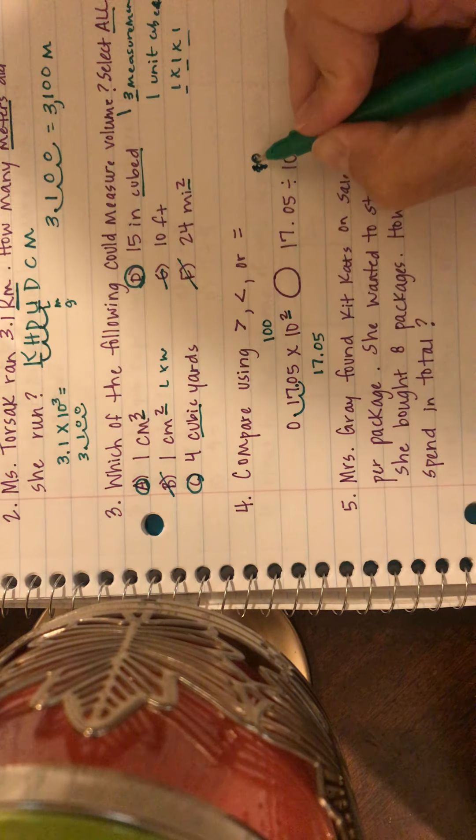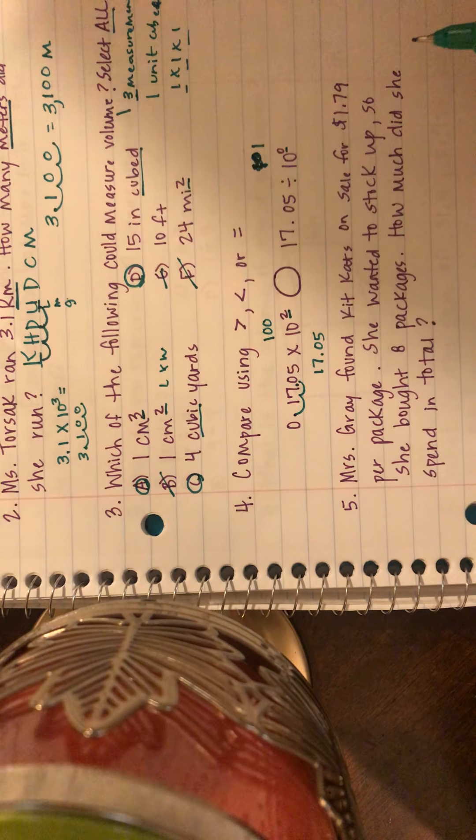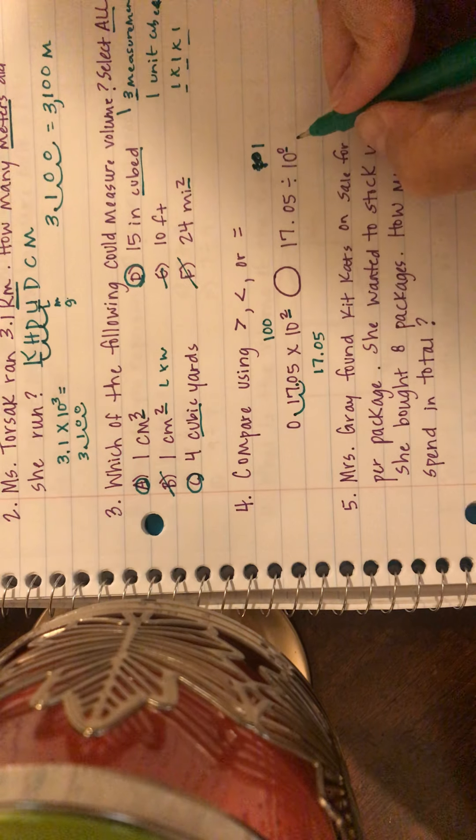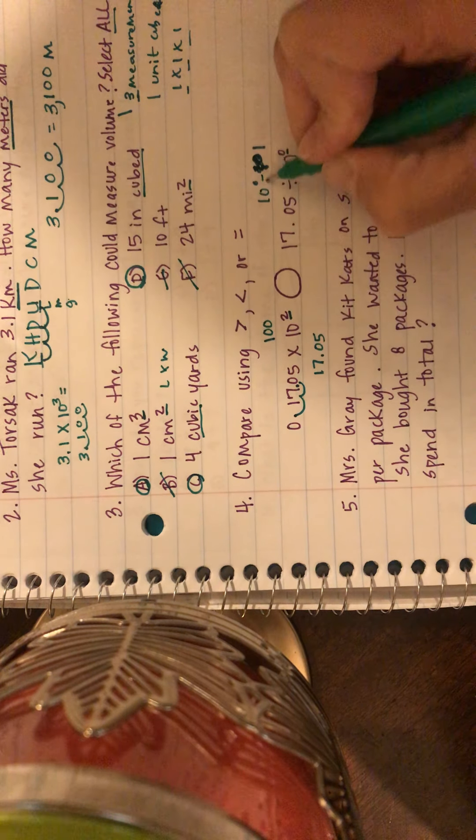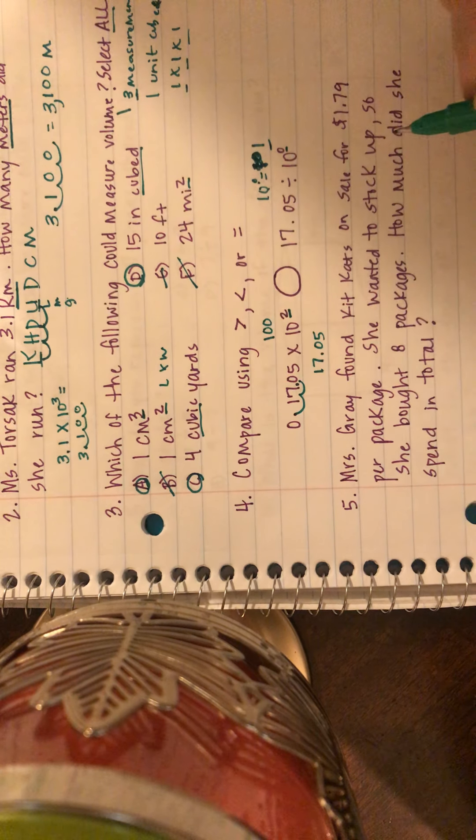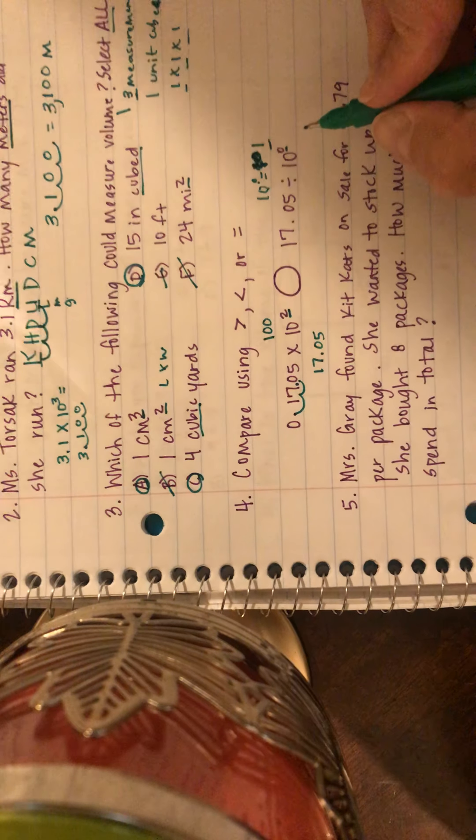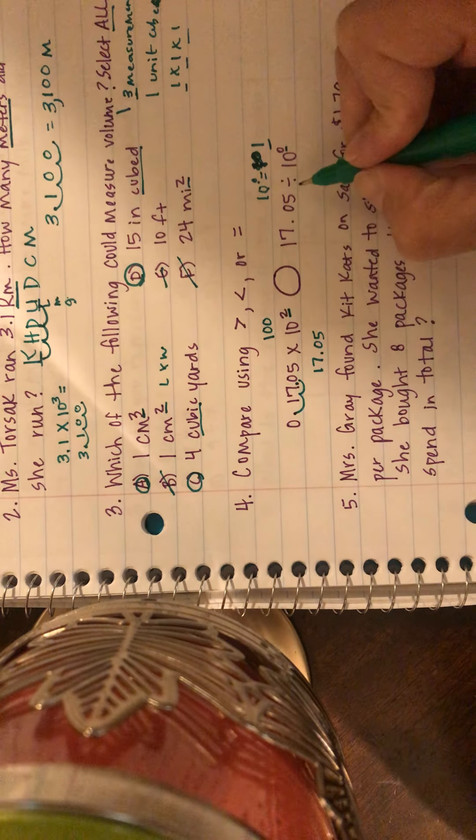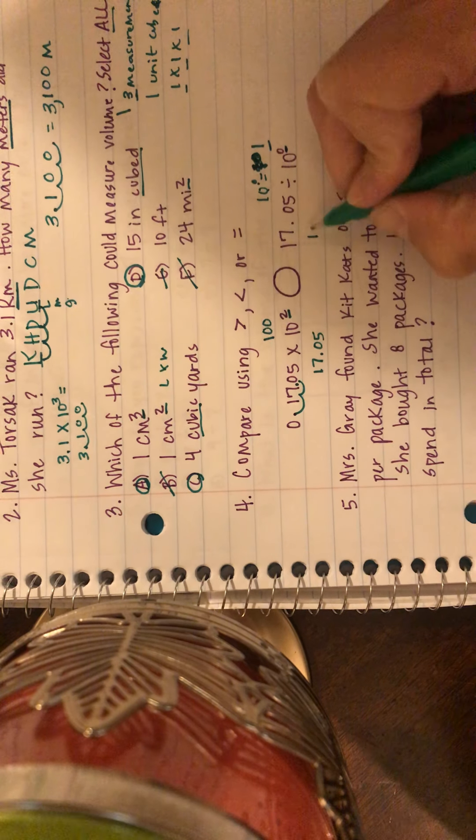So when I take those zeros out, 10 to the zero power equals one whole, because I have zero zeros with my one here. So if I'm dividing or multiplying anything by one, my answer remains the same. So I'm not going to, I'm going to make zero moves, so I'm still going to have 17 and five hundredths, or 17.05, and therefore these two are equal.